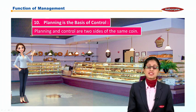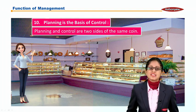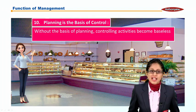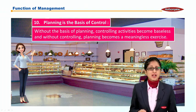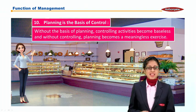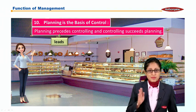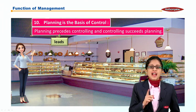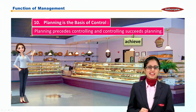The tenth point says planning is the basis of control. Planning and control are two sides of the same coin. Without planning, controlling activity becomes baseless, whereas without controlling, planning becomes a meaningless exercise. Planning precedes controlling, and controlling succeeds — that is, achieves — the planning.